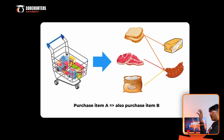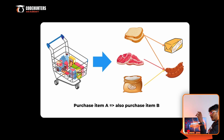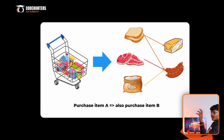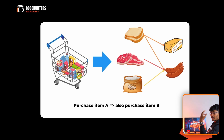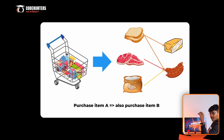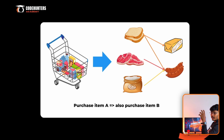Another unsupervised learning topic is association. Similar to clustering, we identify common patterns in data to predict co-occurring events. For example, if a user adds bread to a cart, the system suggests jam or peanut butter. Users who already ordered bread also ordered peanut butter or jam — this pattern is automatically predicted. This is called market basket analysis, and it's an application of association.